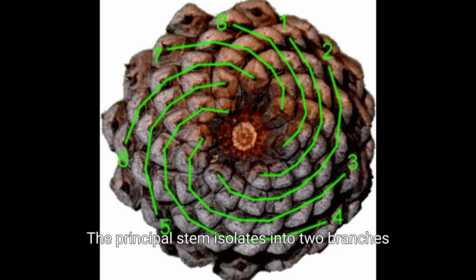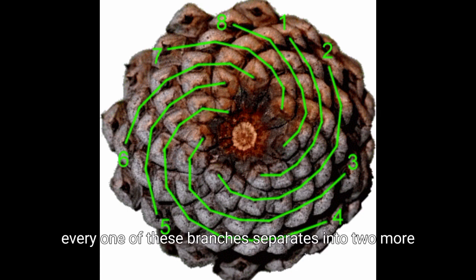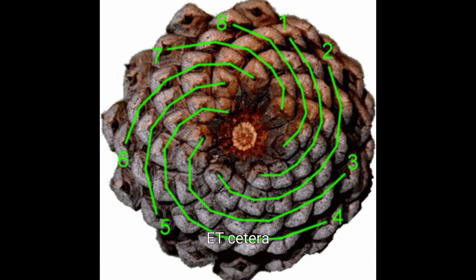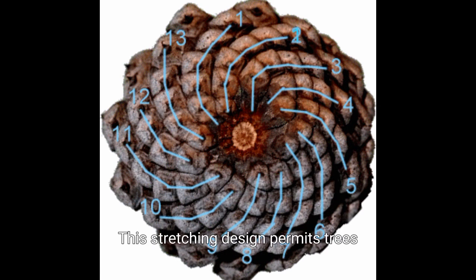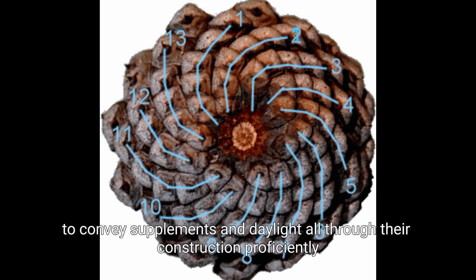The principal stem isolates into two branches, then, at that point, every one of these branches separates into two more, etc. This stretching design permits trees to convey supplements and daylight all through their construction proficiently.